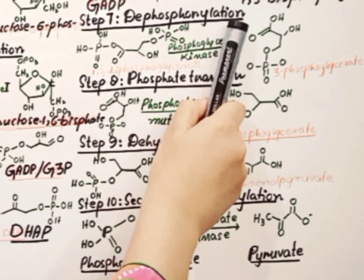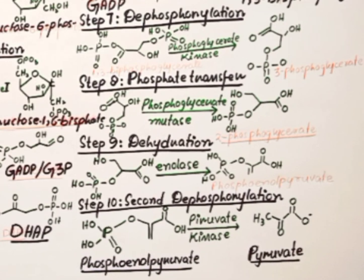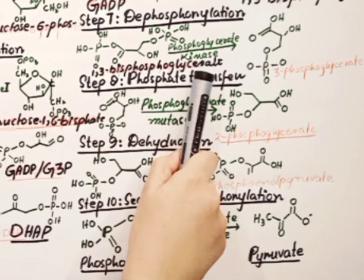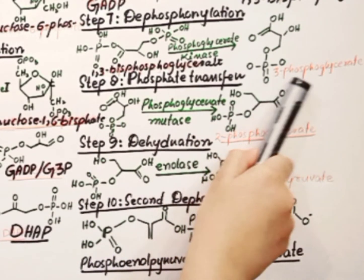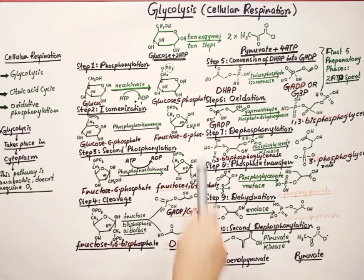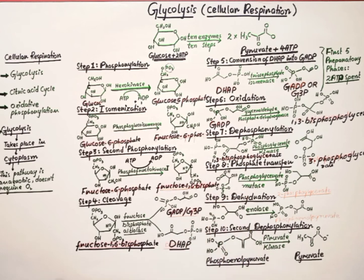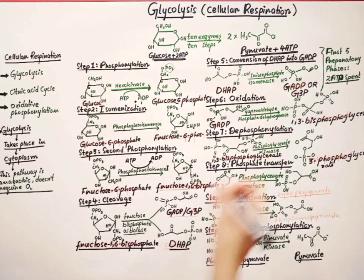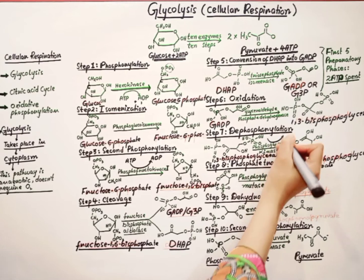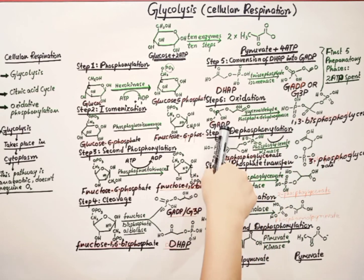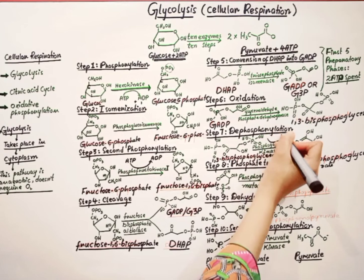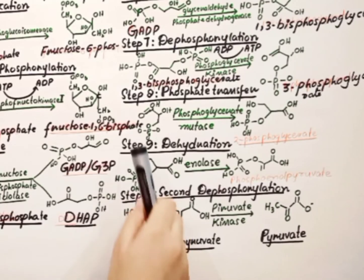In step 7, dephosphorylation takes place. The dephosphorylation of 1,3-bisphosphoglycerate occurs with the help of phosphoglycerate kinase enzyme, converting it into 3-phosphoglycerate. Since we have two molecules of 1,3-bisphosphoglycerate, each molecule releases one ATP during this dephosphorylation.